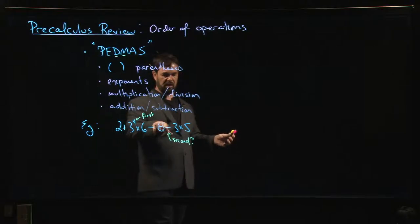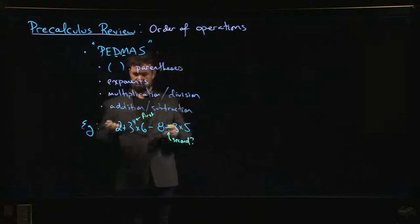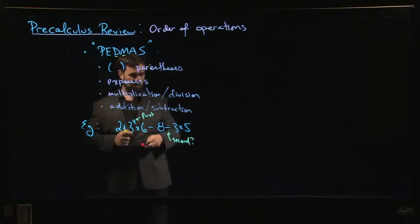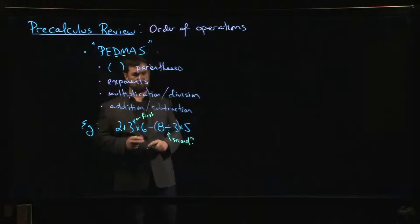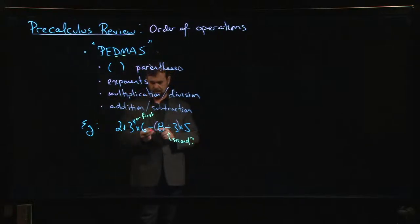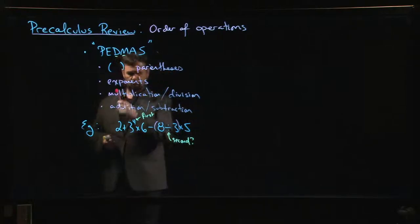You know, 8 ÷ 3 × 5—which do you do first? You should put some brackets in, put some parentheses in, then it's clear. So if I do that, now I understand what I'm doing. I should do 3 to the 4th, which is 81.